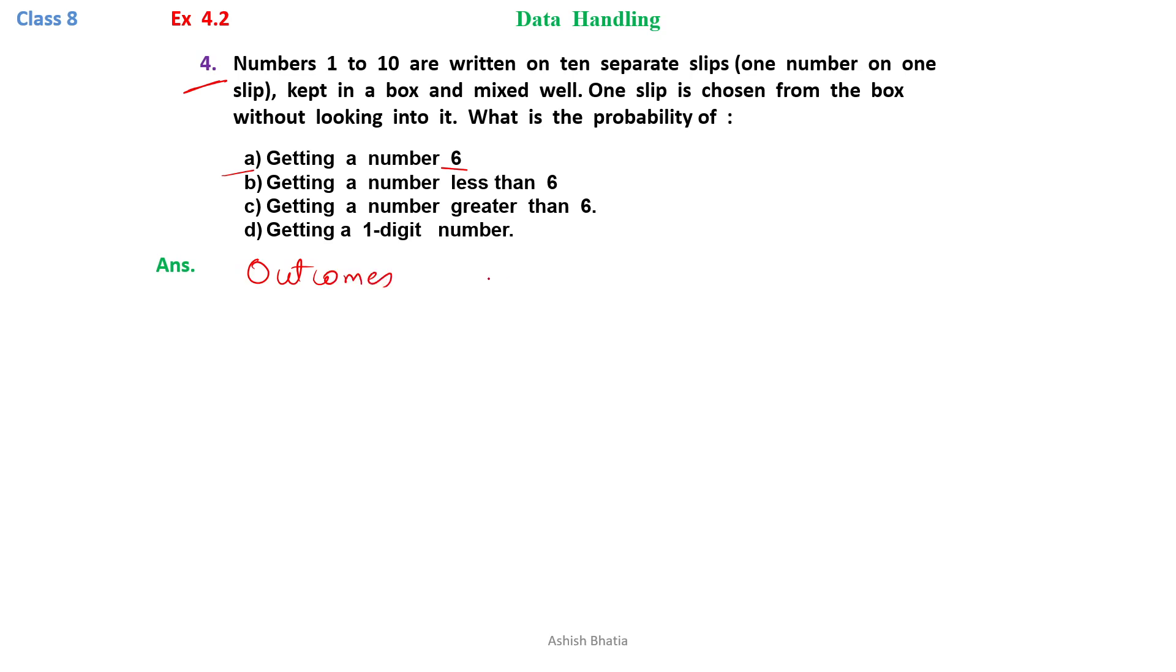The outcomes in this are numbers 1, 2, 3, 4, 5, 6, 7, 8, 9, and 10. These are the outcomes. We can write down total number of outcomes. That would be 10.